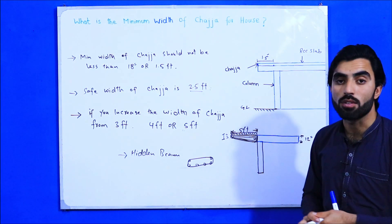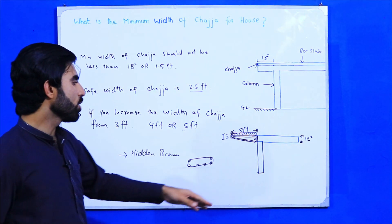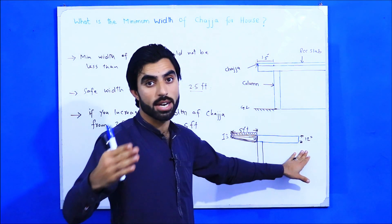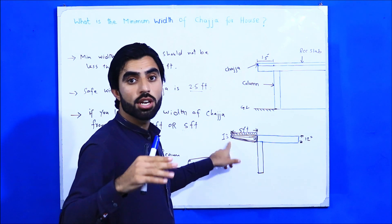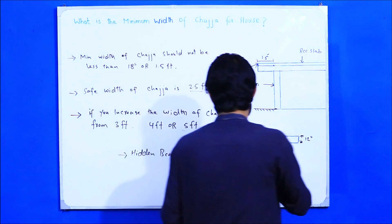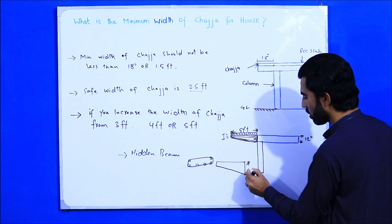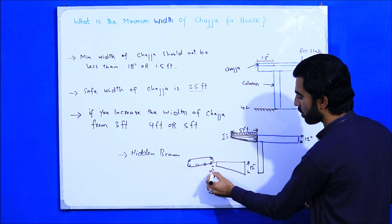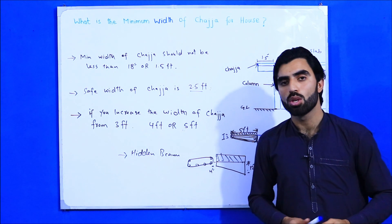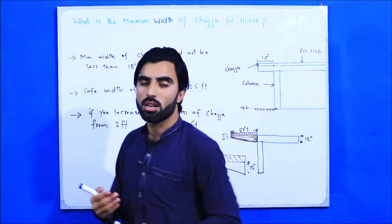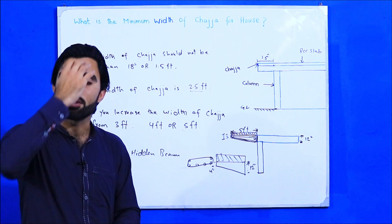These are the important points about what is the minimum width of chadja and what are the rules if you want to increase it. The rule is: if the beam depth at the support is 12 inches or nine inches, then at the free end of the chadja the depth should reduce with a slope to a minimum of three or four inches — otherwise it cannot support the chadja load and structural load. If you have any questions related to this topic, comment below — I will try to reply. Thanks for watching, see you in the next video, goodbye.